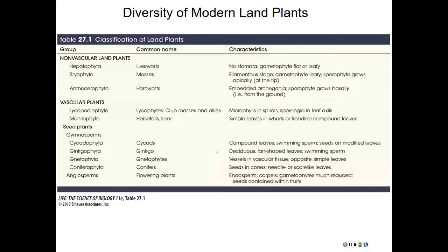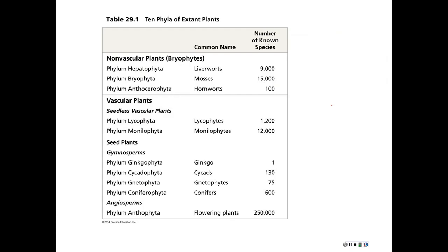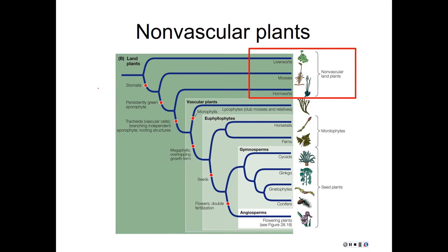We have a couple of tables that break down some different characteristics of these groups and how many species are in each. We're going to focus right now on these nonvascular plants. We're going to take a little break here and then come back to actually talk about these groups.